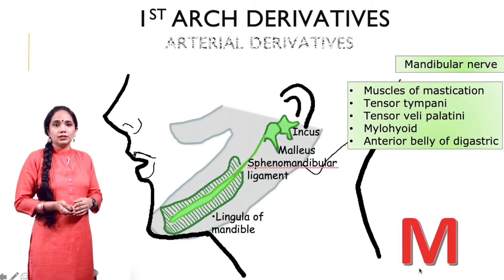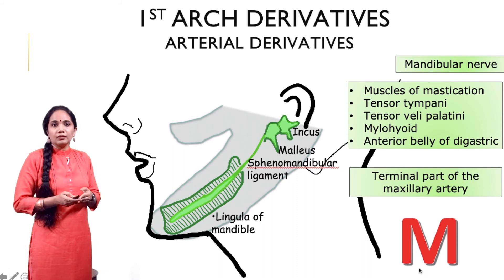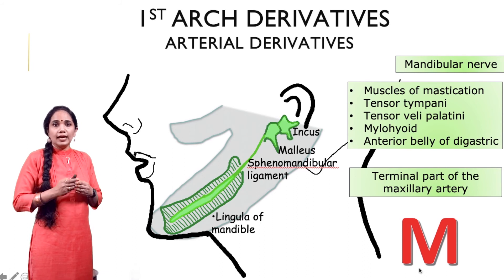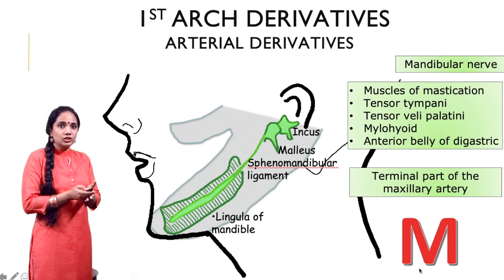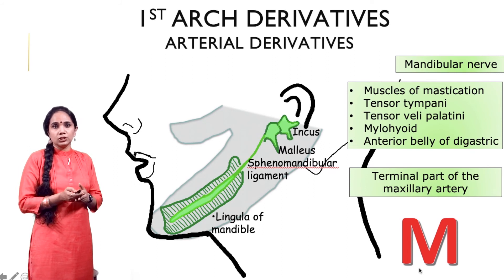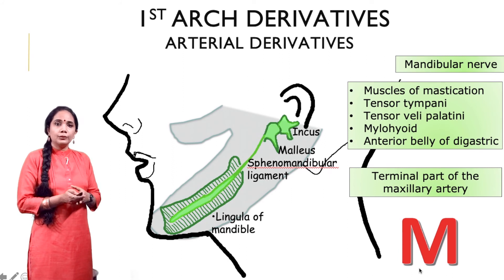What about the arterial derivatives? The terminal part of the maxillary artery is the artery of the first arch. In order to remember all of these structures well, you just have to remember that first arch structures — most of them — start with the letter M.